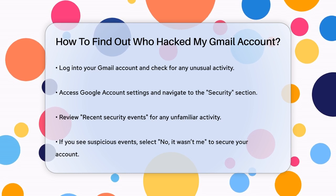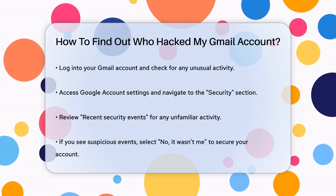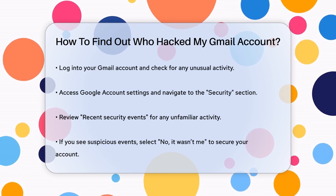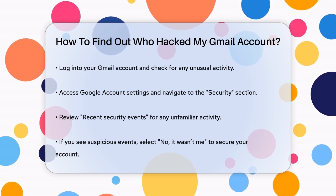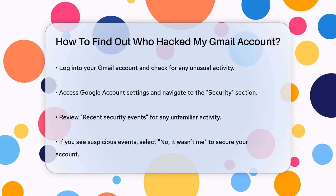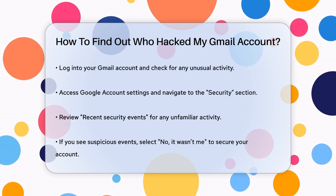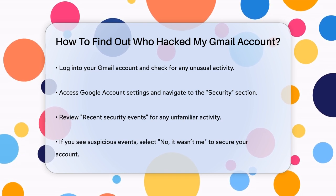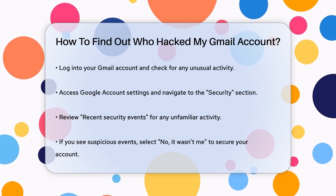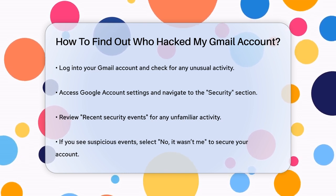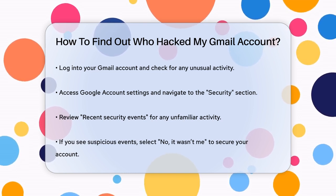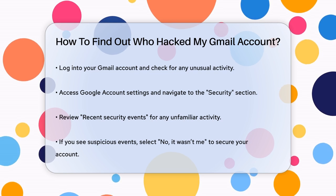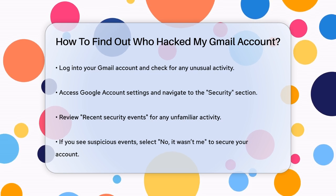First, head to your Google account settings. On the left side, you'll see a menu. Click on Security. Here, you'll find a section called Recent Security Events. Click on Review Security Events to see if there's any activity that you don't recognize.